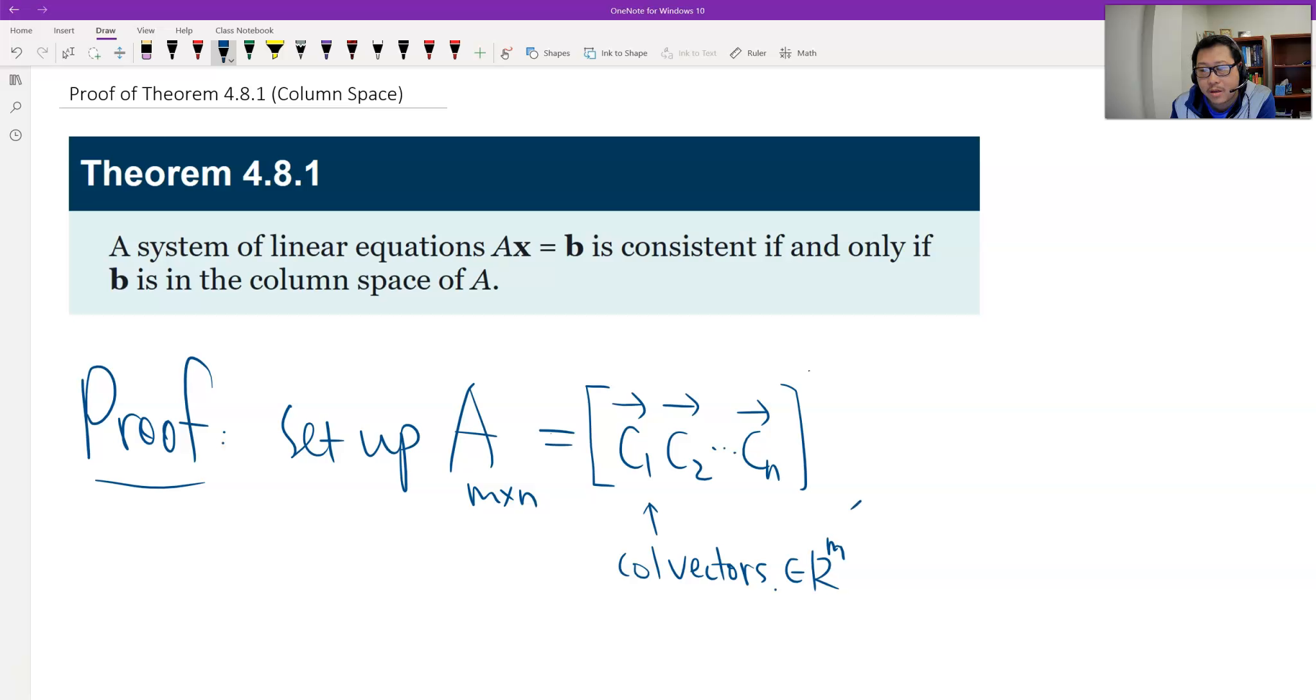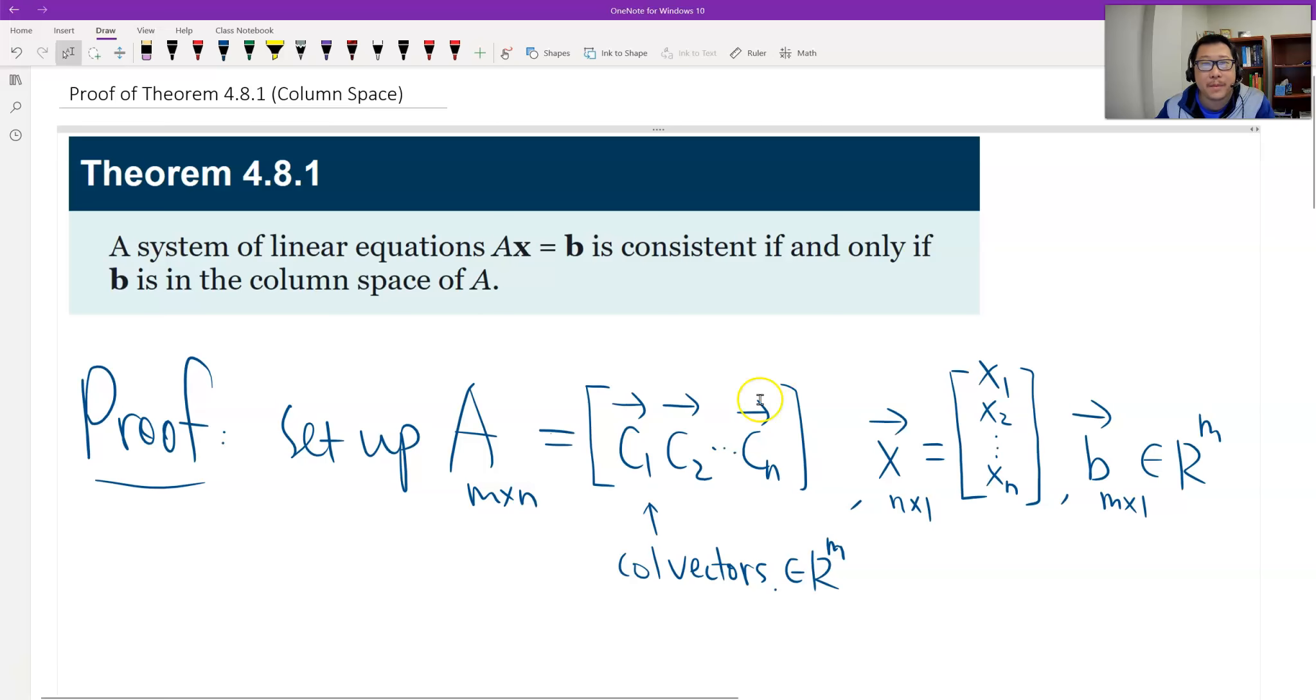Actually, it belongs to n-space, right? So m by 1 should be m by 1. Therefore, the constant vector b should be m by 1, and it belongs to m-space. That's the setting up.